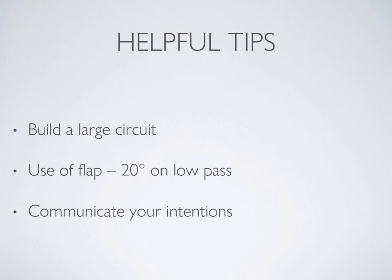Two helpful tips: first, build a large enough circuit so you can complete all steps without rushing. Students often crowd the field, which makes it harder. You don't want it too big and waste time, but don't make it too small. Second, try to get your flaps in on what would be your base leg — get them in early, level off at 1,000 feet, then take your turn towards the low pass. That way you're at altitude, on airspeed, and the aircraft is set up so you can focus on timing and examining the field.